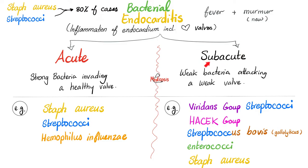Subacute causes include viridans group streptococci, including Streptococcus mutans and Streptococcus mitis, the HACEK group Streptococcus bovis — currently known as Streptococcus gallolyticus — enterococci, and sometimes Staph aureus again. If you want to learn about all of these bacteria, please check out my microbiology playlist where we have talked about them in detail.